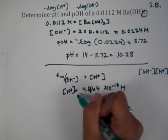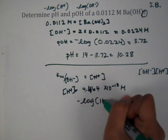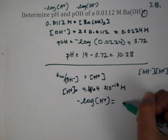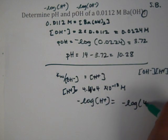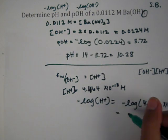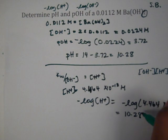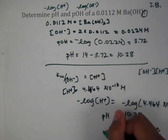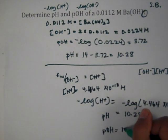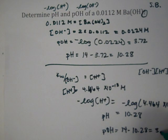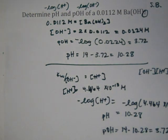Then we could have taken to get pH negative log of that hydronium. And our number would have still been the same, 10.28 would have been pH. Then we would have done pOH with 14 minus 10.28, which gives 3.72.